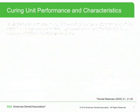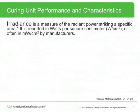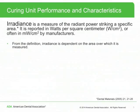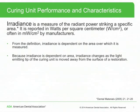Irradiance is a measure of the radiant power striking a specific area. It is reported in watts per square centimeter, or often in milliwatts per square centimeter by manufacturers. Irradiance is dependent on the area over which it is measured, and therefore changes as the light emitting tip of the curing unit is moved away from the surface of a restoration.